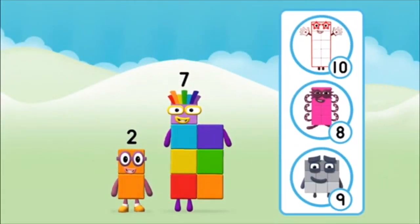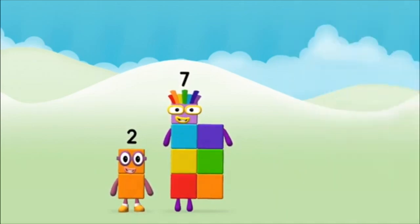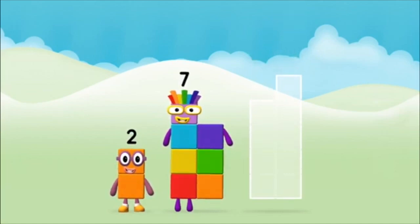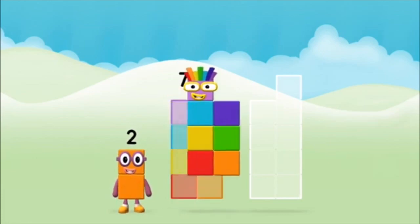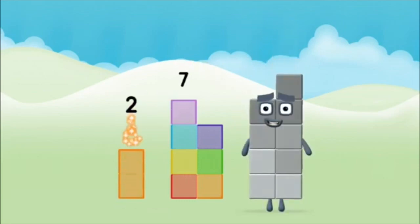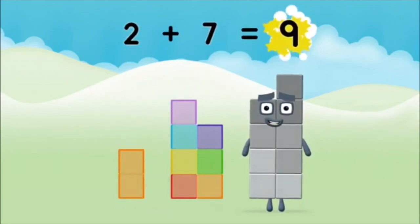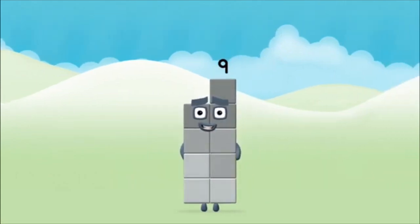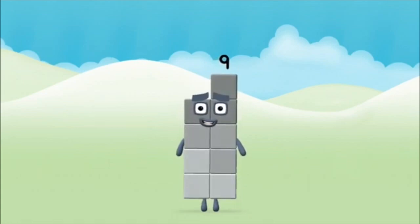Which number block do you think adding these together will equal? Correct! You chose the right answer! Now add the number blocks together! Seven, seven, two — two plus seven equals nine! Congratulations — you made number block nine!